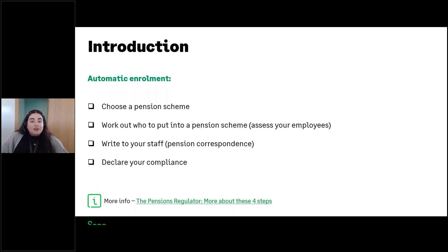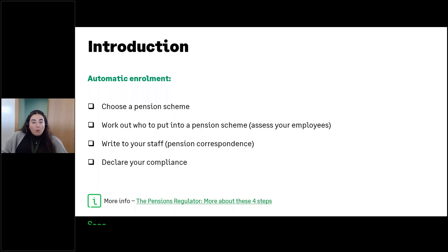You also need to write to your staff — this must be done within six weeks of your duty start date — to explain how automatic enrollment applies to them. This is often called pension correspondence, so you can do this by sending pension correspondence letters to your employees. The fourth step is to declare your compliance: you've got five months after your duty start date to do this, declaring that your workplace pension is compliant and all information provided is accurate. More detail on these four steps is available via the link to the Pensions Regulator website at the bottom of this slide.